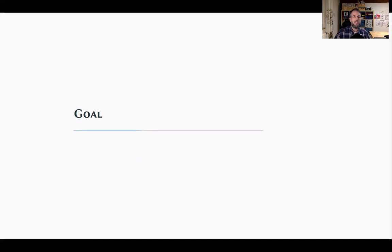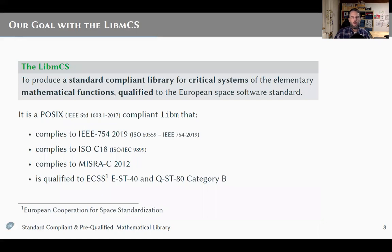Now to the goal we pursued with the LIB-MCS. What we wanted was to produce a standard-compliant library for critical systems, including all the mathematical functions that can be expected for such a libm, and to have them qualified to the European Space Software Standard. When we say standard-compliant, we mean the LIB-MCS is POSIX-compliant, IEEE 754 floating-point arithmetic standard compliant, compliant to the ISO-C standard, and compliant to the MISRA-C standard — and on top of that, qualified to ECSS Engineering Standard 40, Quality Standard 80, up to Category B level.